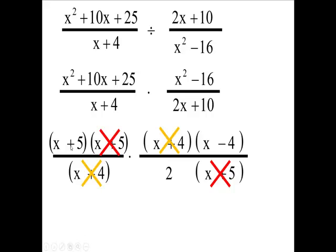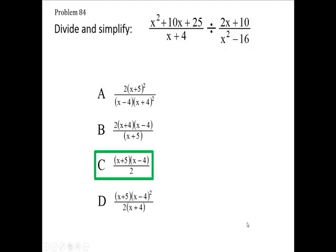What does that leave me? x plus 5 times x minus 4 over 2. All right. Of my four answers, I pick C.